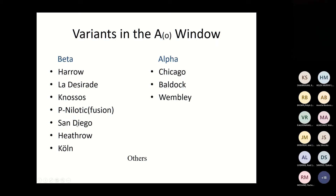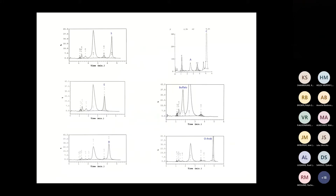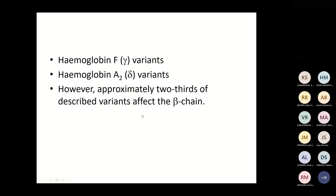Some beta chain variants are seen in the HPLC A window. A patient with an exceptionally high haemoglobin F level was actually found to have haemoglobin Marcel — a variant in the gamma region. Different peaks show S coming off at the end, C, haemoglobin E running within the A2 window, haemoglobin Buffalo coming off fast, and haemoglobin D Punjab. Haemoglobin D Iran runs in the A2 window with haemoglobin E and haemoglobin O Arab. Most variants we see are beta chain variants.